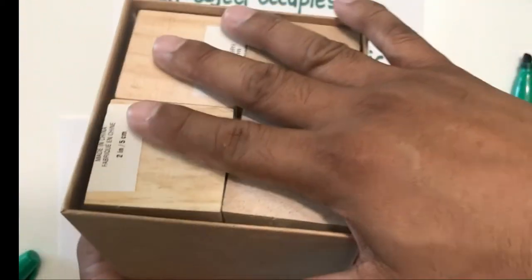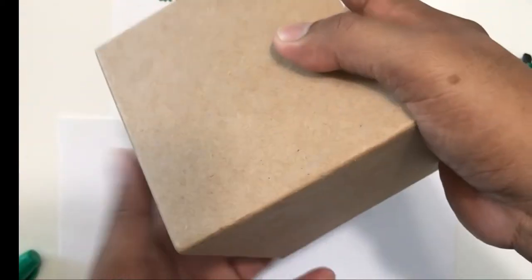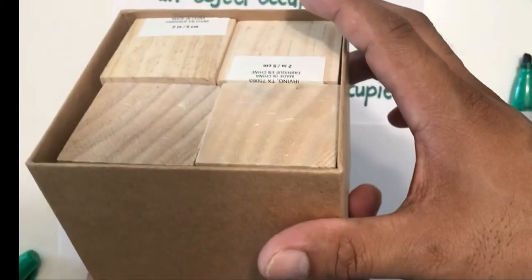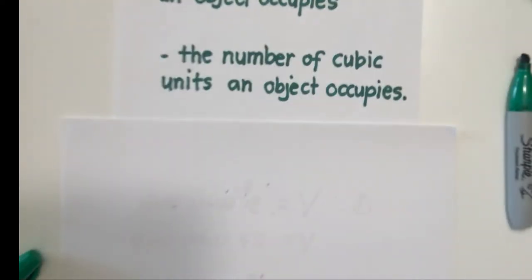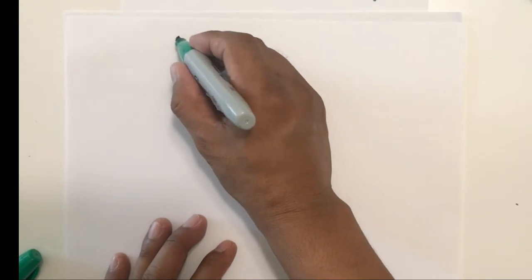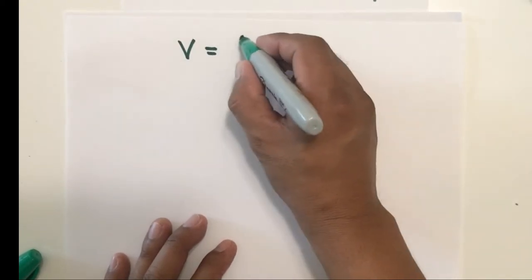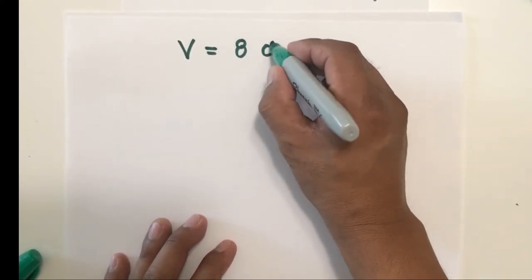So we therefore say, assuming that all the spaces are occupied, we now say that the volume of this box is 8 cubic units. Let's write it down. So the volume of the box is 8 cubic units.